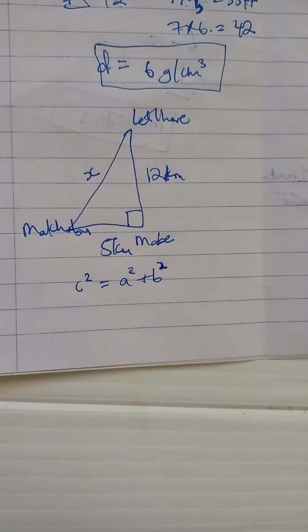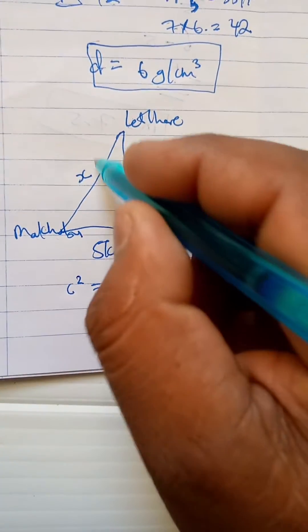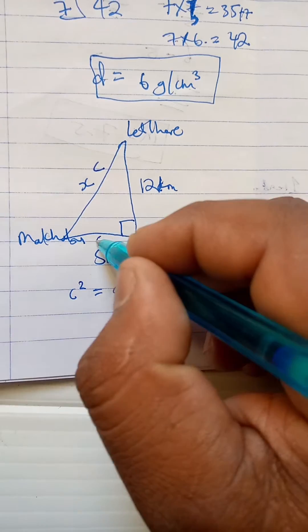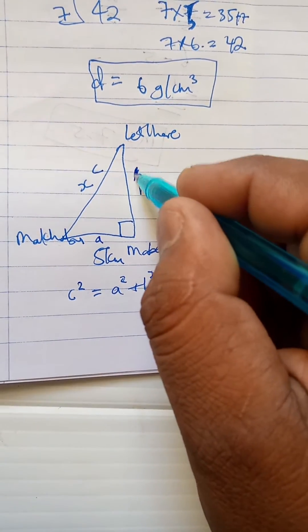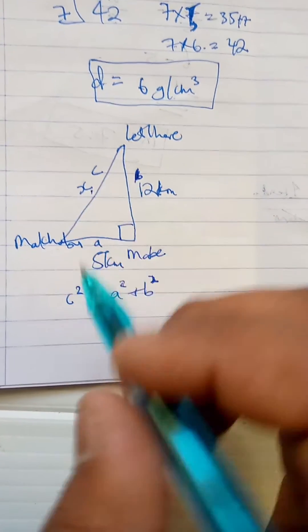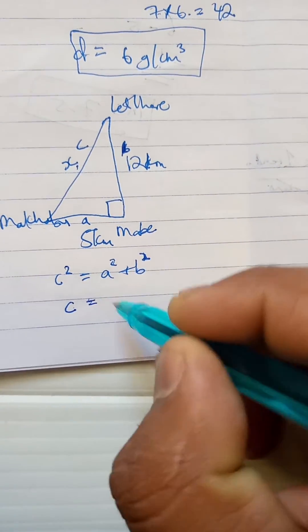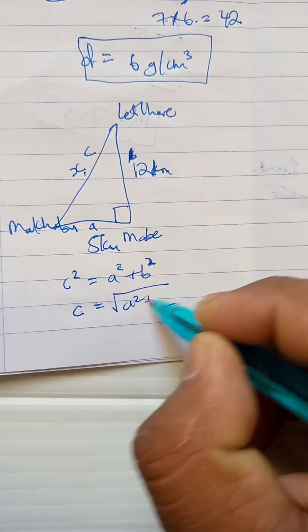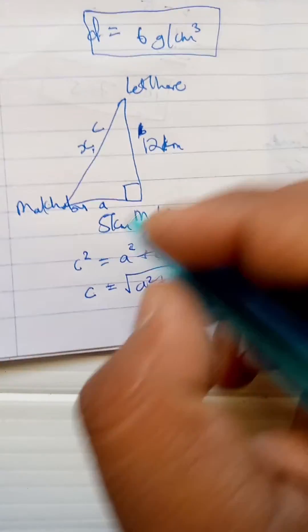C is the hypotenuse, and B and A are the opposite and adjacent sides. We're looking for C, so we find it by doing a² plus b².